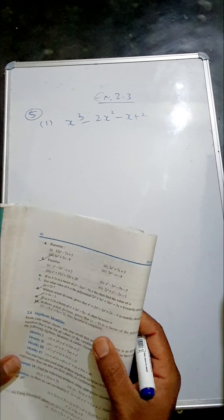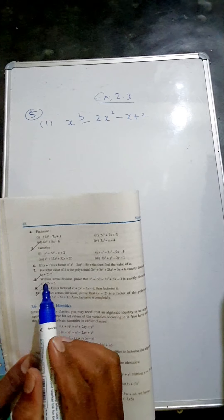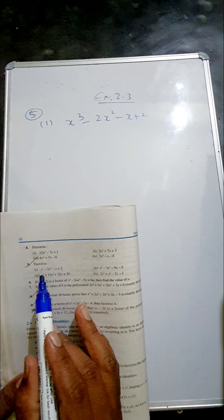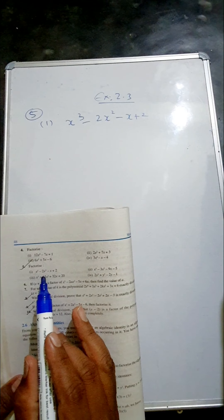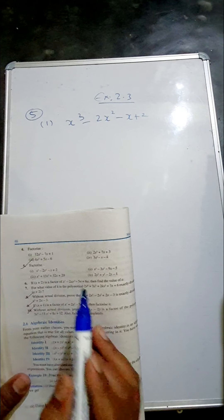Exercise 2.3, question number 5. Factorize x cubed minus 2x squared minus x plus 2.